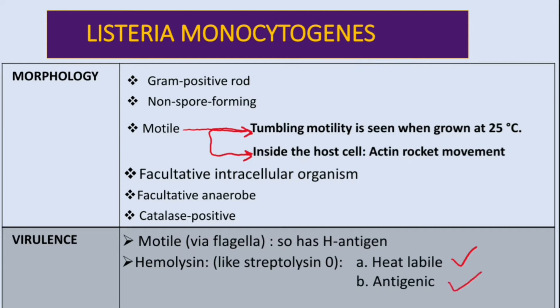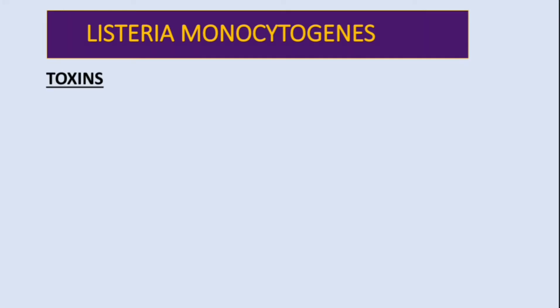Being antigenic means it has the ability to stimulate the immune system to produce antibodies against this bacteria. Before talking about toxins, you need to know that immunocompetent hosts are not susceptible to listeria.